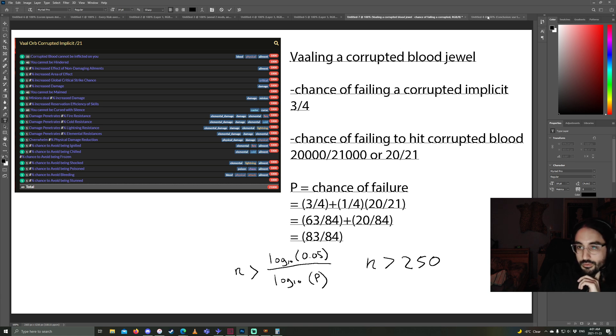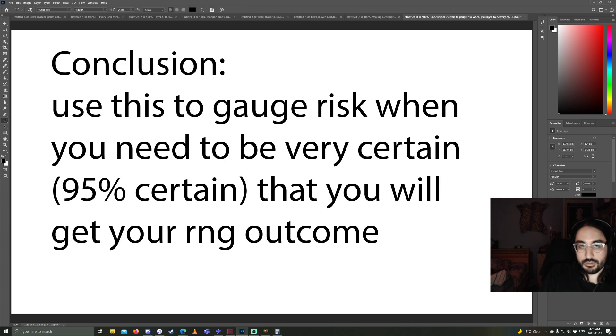Alright, now let's go on to the conclusions, because I'm not going to do just infinite number of examples. So, what are the conclusions? You should be using this formula to gauge risk when you need to be very certain that you will get the RNG outcome you require. So, when you're very risk-averse, this kind of gives you a little bit of a cushion, where if you do this much investment, you are almost definitely likely to succeed. Still, the average probabilities of success are always going to be much better than the n that we're getting from these equations. But this n is just sort of like a safety net, where if you invest this much, almost 95% of the time, you will succeed. That's the insight you should get from this.